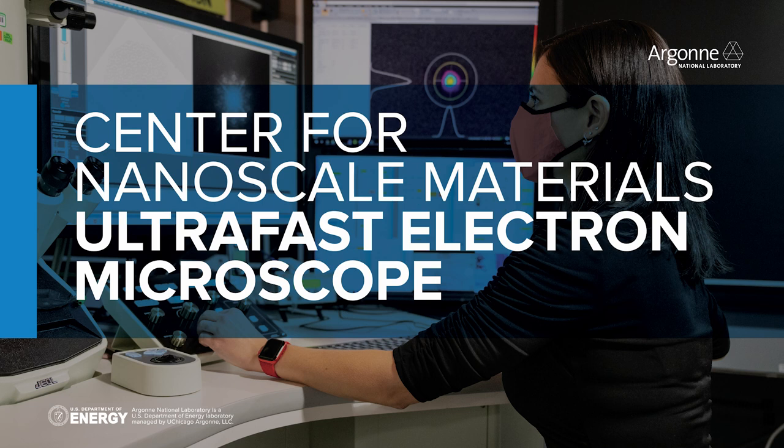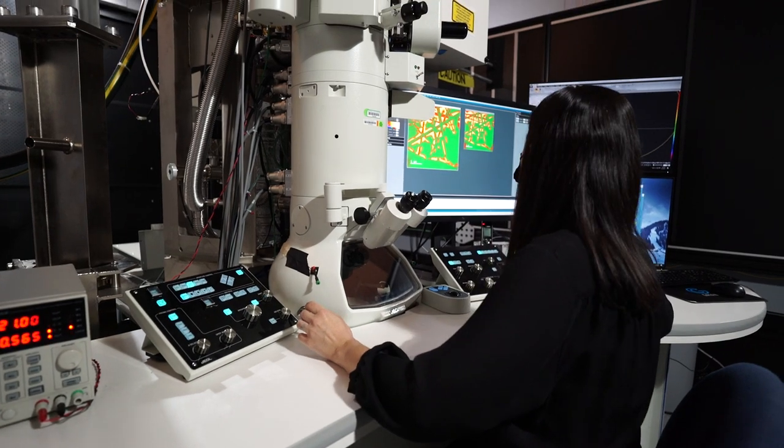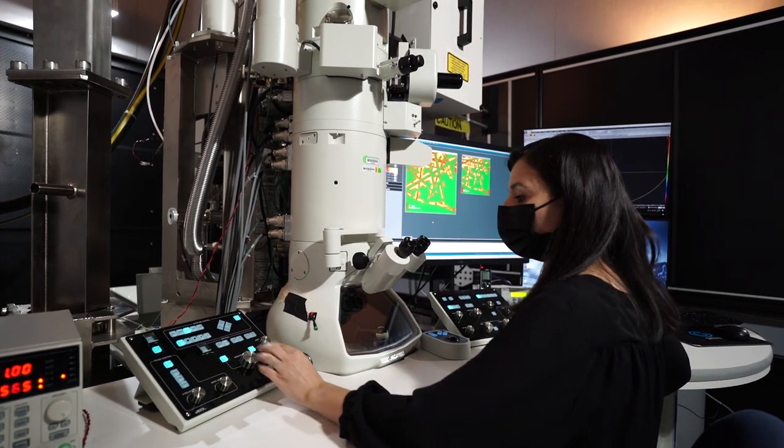The ultrafast electron microscope brings together two separate techniques, both of which are very complex in their own right. One of them is ultrafast laser spectroscopy and the other is transmission electron microscopy.